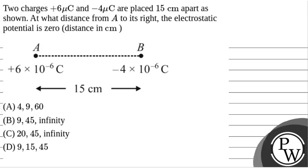Hello, let's read the question. The question says that 2 charges, plus 6 microcoulombs and minus 4 microcoulombs, are placed 15 cm apart as shown. At what distance from A to its right is the electrostatic potential 0? Distance in centimetres.